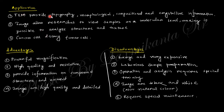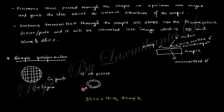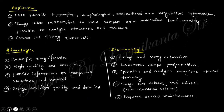From TEM you can obtain topography and composition of the material. Advantages include powerful magnification and high-quality, high-resolution images with fine detail. The disadvantages are that TEM instruments are large and very expensive, laborious sample preparation is required — the sample diameter is about 1 mm and the thickness must be ~30 nm, making it difficult to handle. Operational analysis requires special training. Images are black and white, and special maintenance and trained personnel are required.